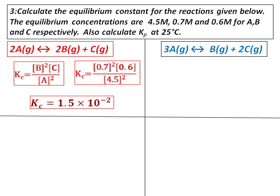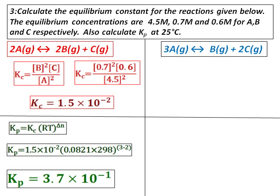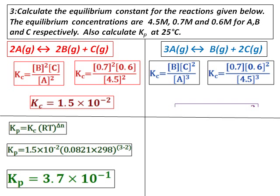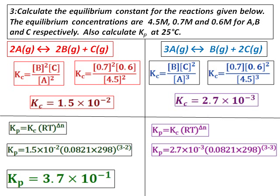To calculate Kp, we use Kp equals Kc times RT raised to the power of delta N. Delta N is moles on the product side minus the reactant side, so delta N equals 3 minus 2 equals 1. Convert temperature to Kelvin and use R equals 0.0821, giving Kp equals 3.7 times 10 to the power of negative 1. Now for the equation on the right-hand side, 3A giving you B plus 2C: the number of moles in the products equals the number of moles in the reactants, so delta N equals 0, and therefore Kp equals Kc.